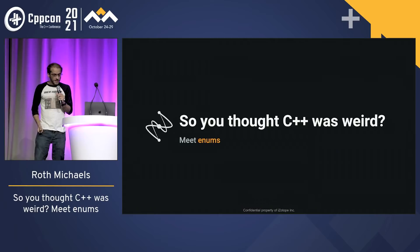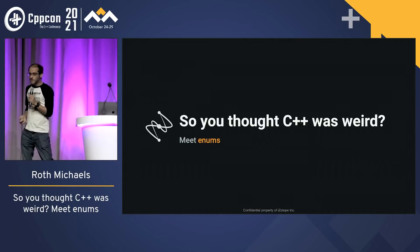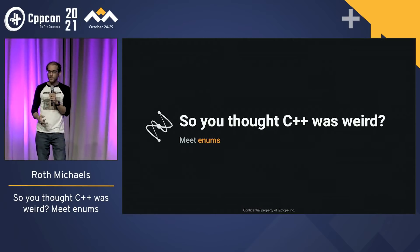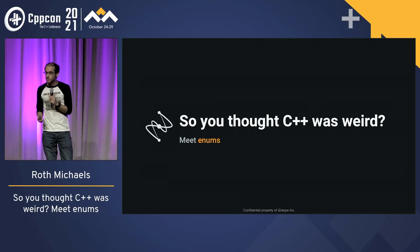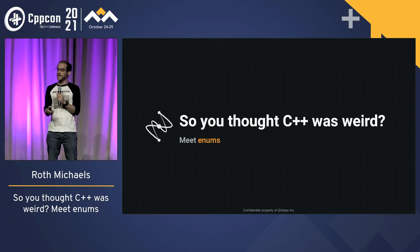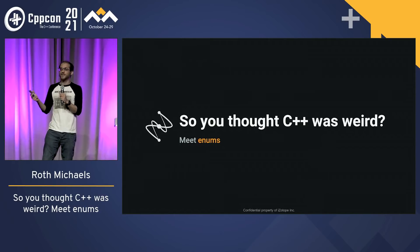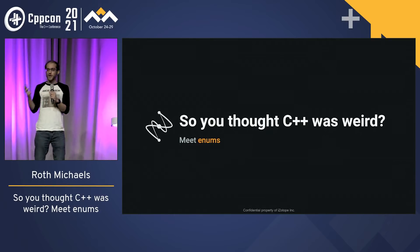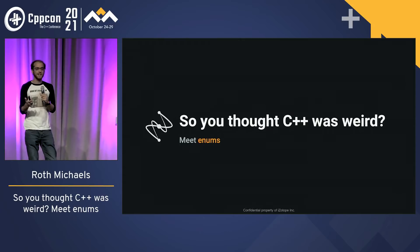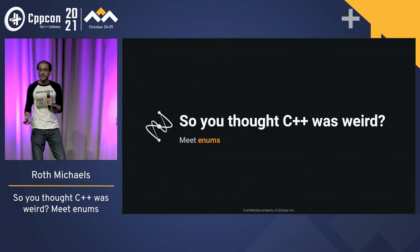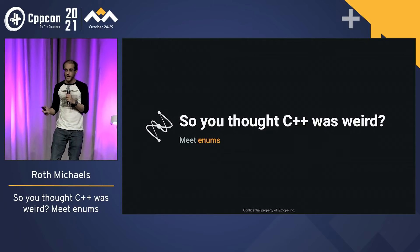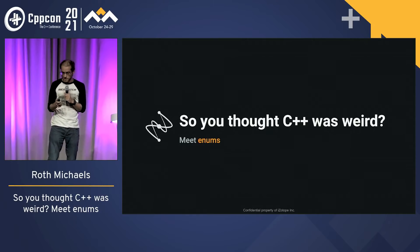This talk was inspired by a developer I work with who mentioned they were disappointed that enum class was not type-safe. We talked about it — it is type-safe. It just is weird and challenges your expectations from enum if you've had that experience anywhere else in your life other than C and C++.